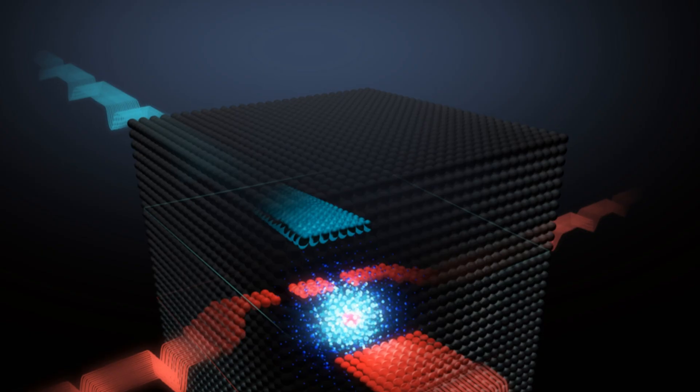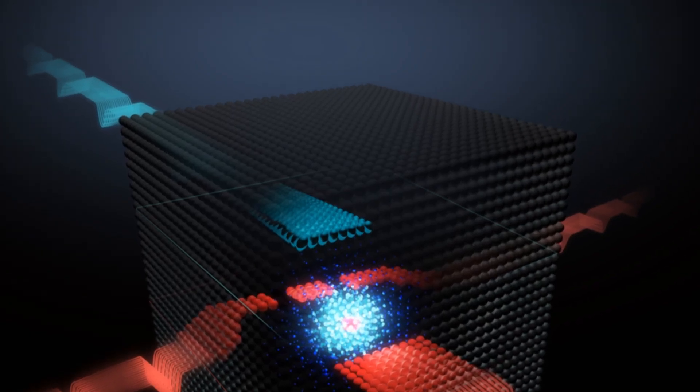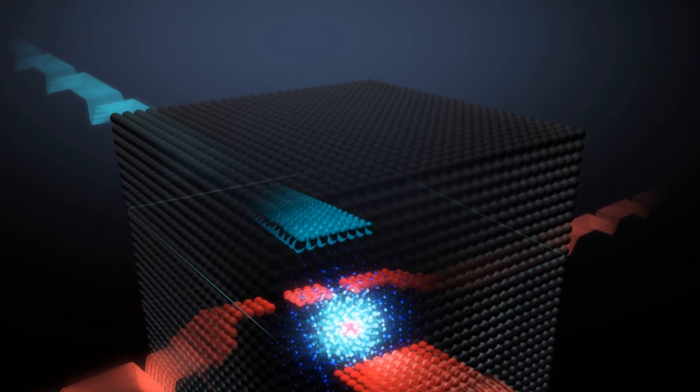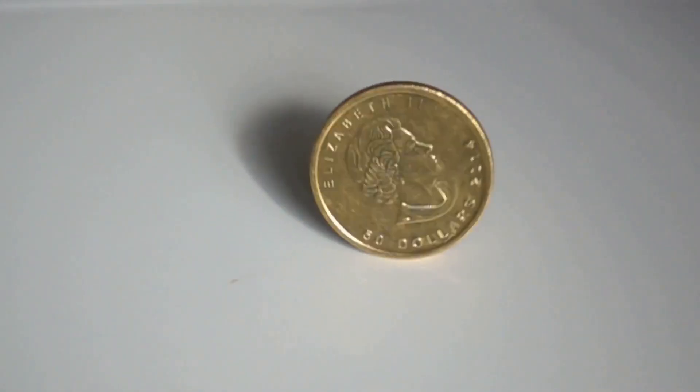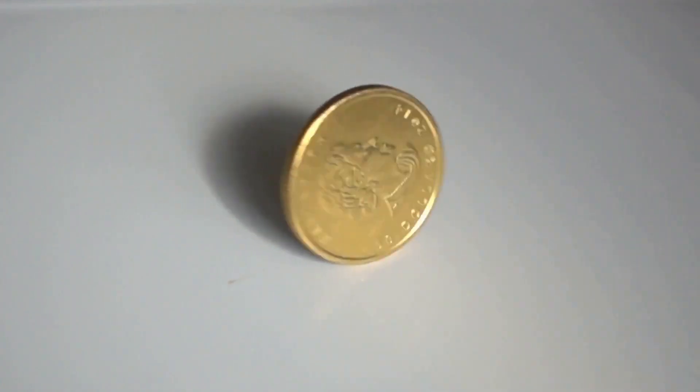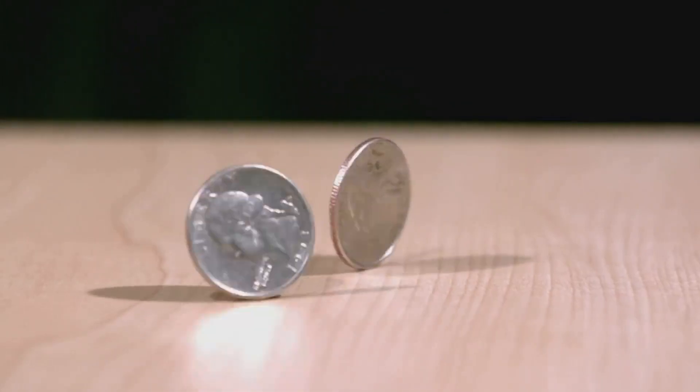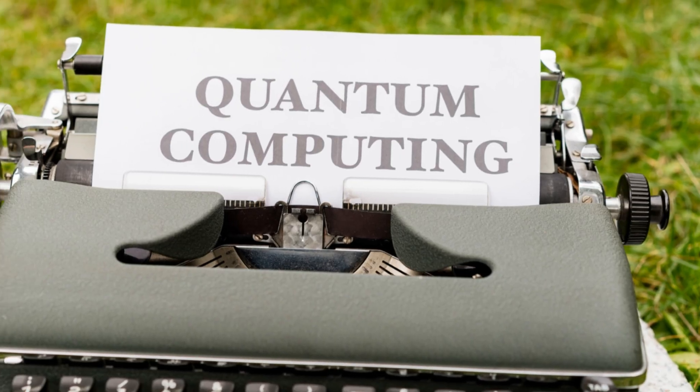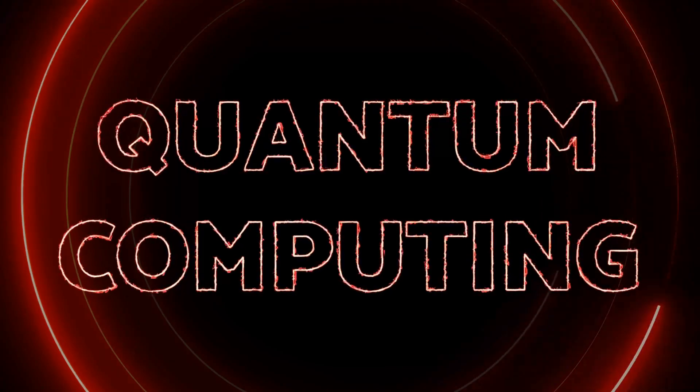This is called superposition. Imagine a coin spinning in the air—it's neither heads nor tails until it lands. That's kind of like superposition. This ability to be in multiple states simultaneously is what gives quantum computers their incredible power.